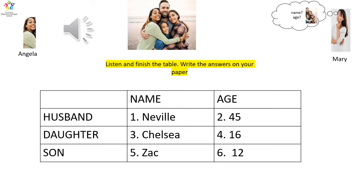How old is he? He is 45 years old. What's your daughter's name? My daughter's name is Chelsea. How do you spell Chelsea? It's C-H-E-L-S-E-A. How old is she? She is 16. What is your son's name? My son's name is Zach. How do you spell Zach? It's Z-A-C. How old is he? He is 12.